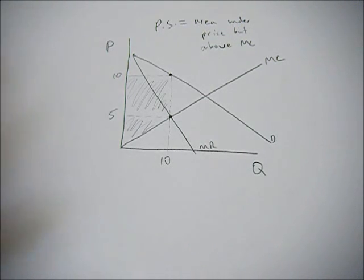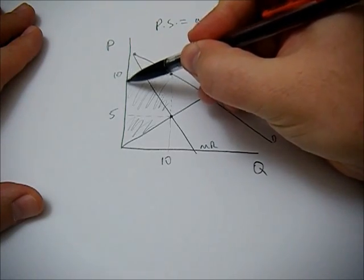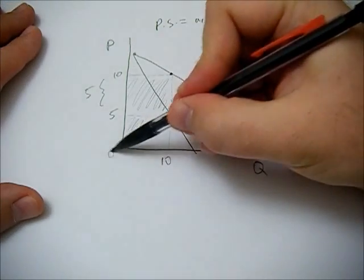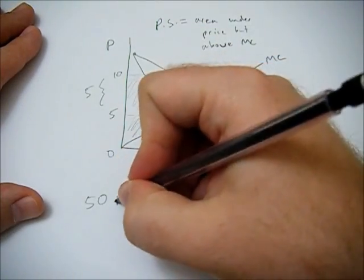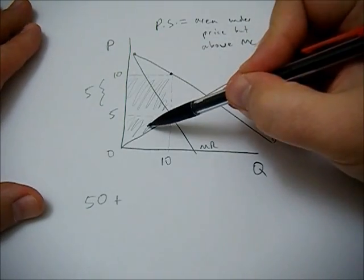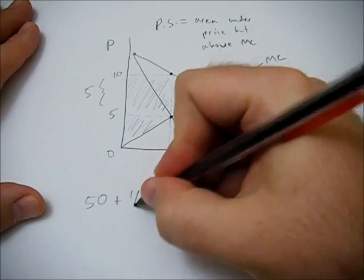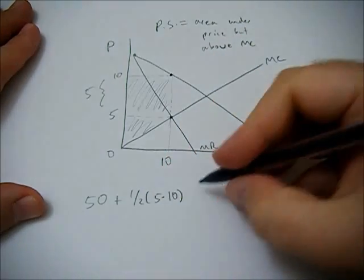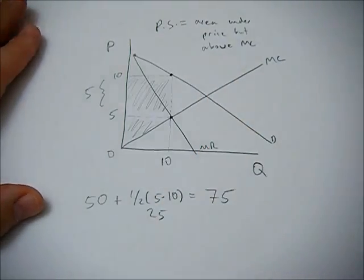So we just have to calculate the area of two shapes and then we'll be fine. So the area of the rectangle is just going to be base times height. The height is 5, the base is 10, so 50. And then plus the area of the triangle, height of 5, base of 10, so half base times height equals 25, so 50 plus 25 is 75.